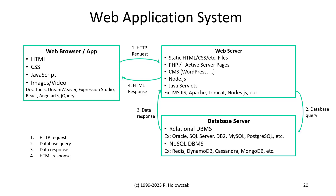The application server in the middle is actually a web server, which could be running Microsoft Internet Information Server, Apache, or a Java servlet engine like Tomcat, or an application server like Node.js. There are many different programming languages—such as PHP, Active Server Pages, and JavaScript—that could be used to write the business logic on that web server.